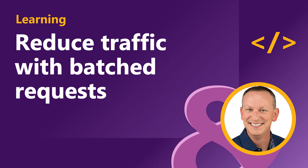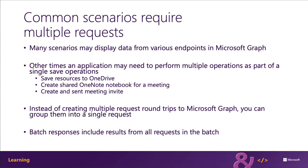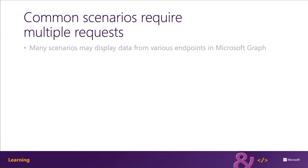In this section you're going to learn how to optimize applications that have complex or many interactions with Microsoft Graph. Many complex scenarios can involve complex interactions with the data that is exposed via Microsoft Graph. For instance, consider an application that needs to display three different types of data from Microsoft Graph.